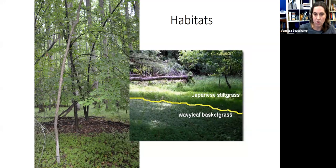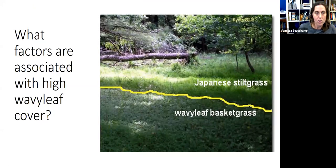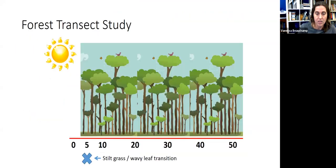One thing we noticed is there are places where it does not grow well. We noticed that underneath beech trees we tend not to see it, and that wavy leaf does well in the understory but as soon as you get out into a light gap, trail, or forest edge, stilt grass tends to take over. We were curious why. Our question was: what factors are associated with high wavy leaf cover? We did a forest transect study at a variety of sites around Maryland, running transects from the edge of the forest into the forest 50 meters, sampling wavy leaf cover and other variables like light, cover of other species, number of beech trees, soil moisture, and so on.